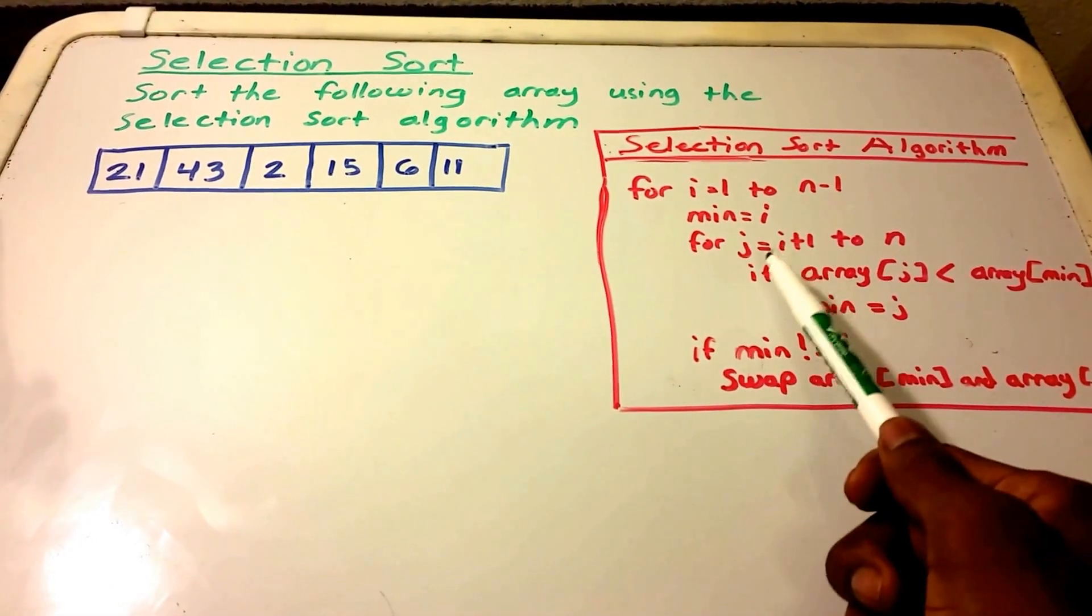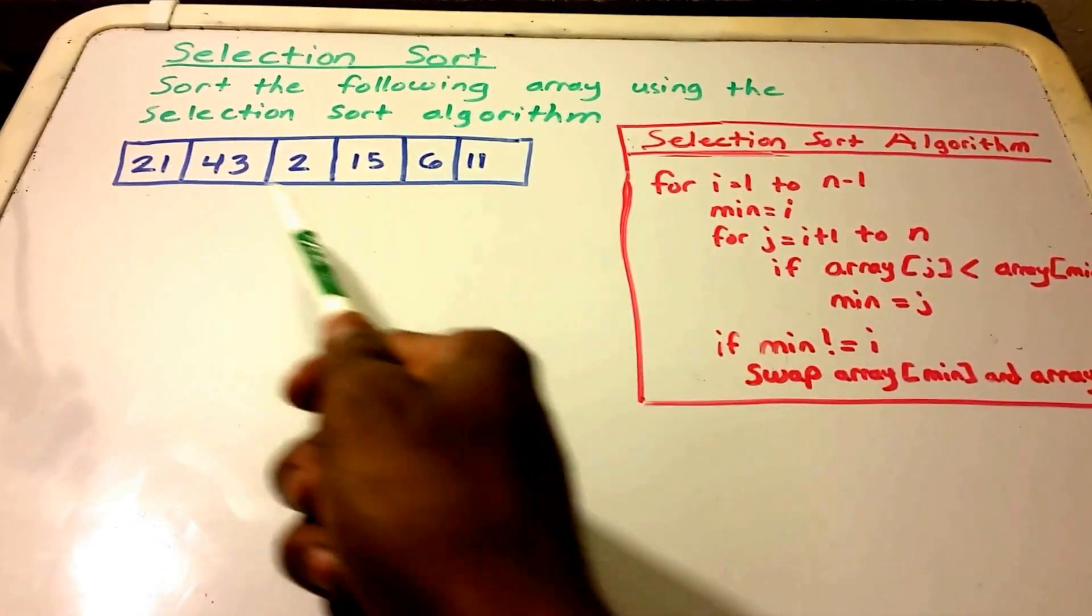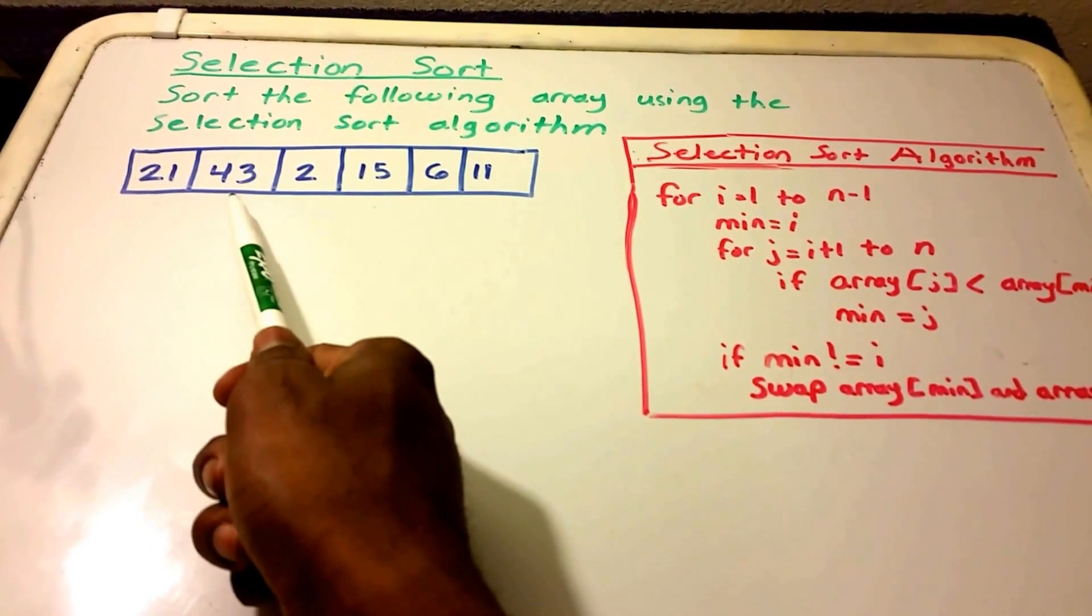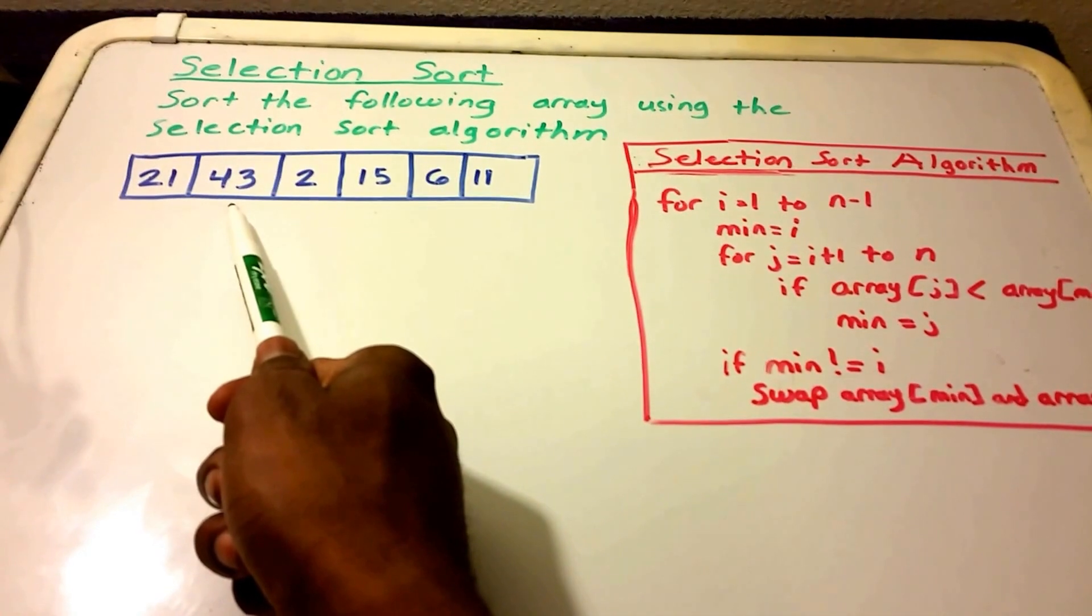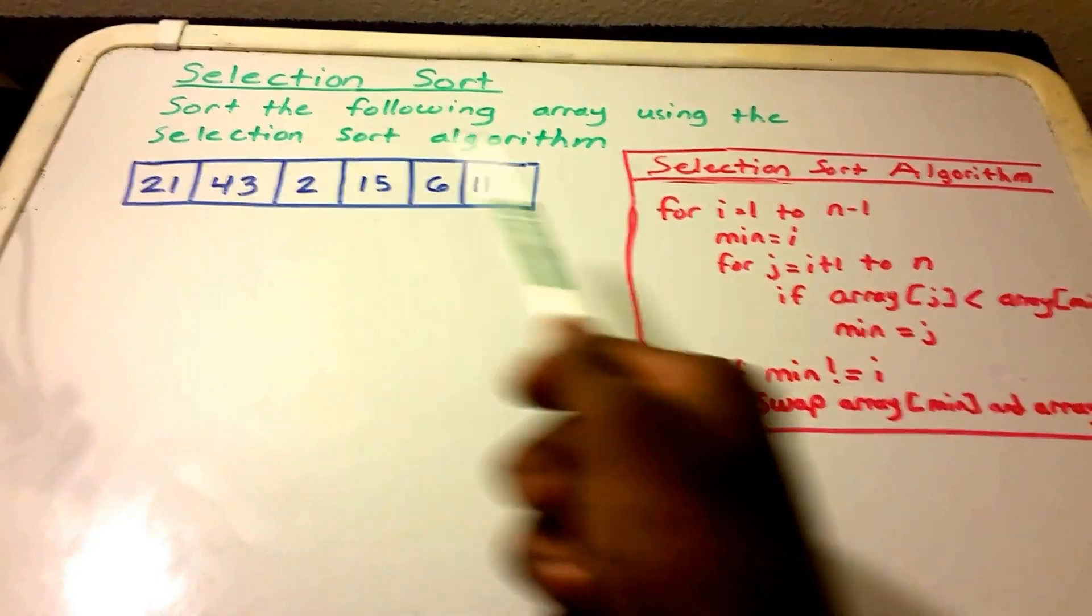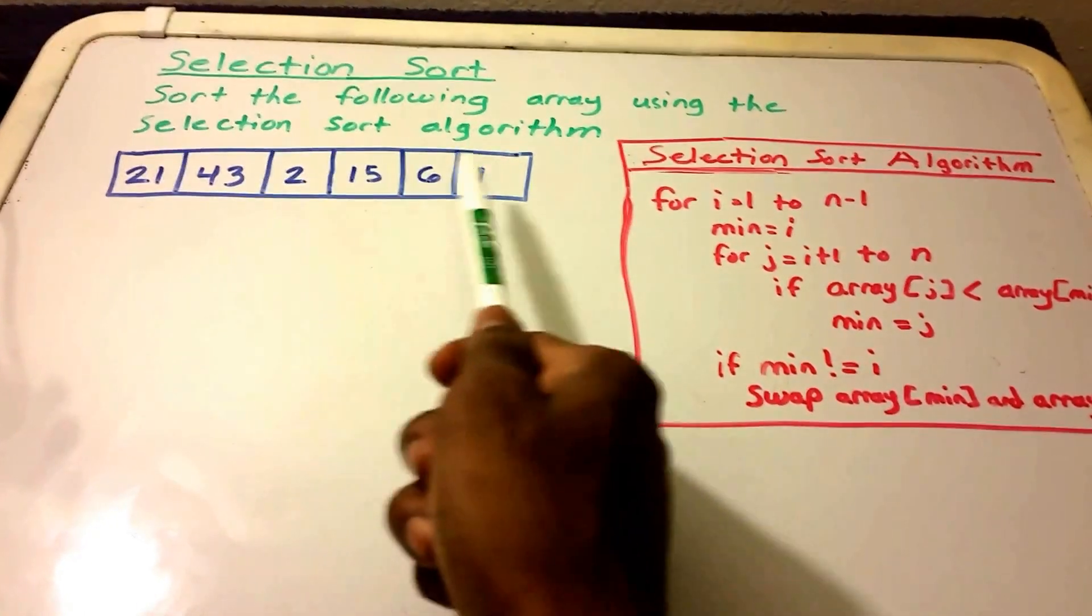Then it goes into another loop. And it starts at i plus 1. So it starts not at i, which would be our 21 here, but it would be 43. So j would equal to i plus 1, which is 43. And it's going to go from the second element all the way up to n, which is the length of the array. So from 43 to our 11 here.